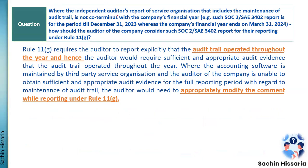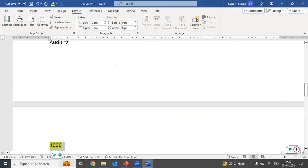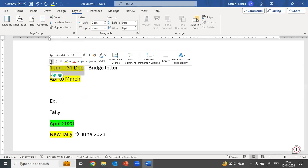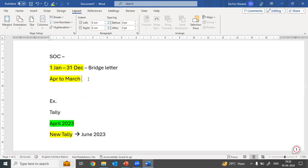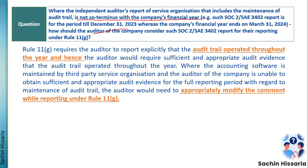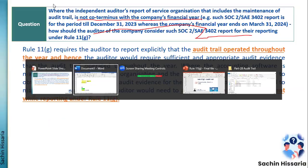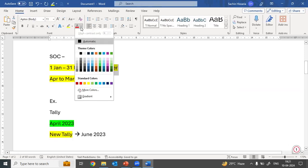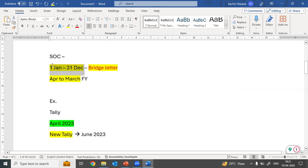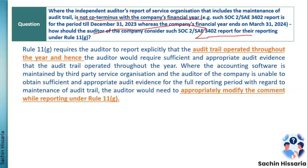Next question: where the independent auditor's report of a service organization covering audit trail maintenance is not co-terminus with the company's financial year, how should the auditor consider the SOC report? If the SOC audit period is January to December but the financial year is April to March, you need to ask the company for a bridge letter covering January to March. If the company does not provide the bridge letter, you can modify your report as it doesn't provide assurance that the audit trail was enabled for the entire financial year.